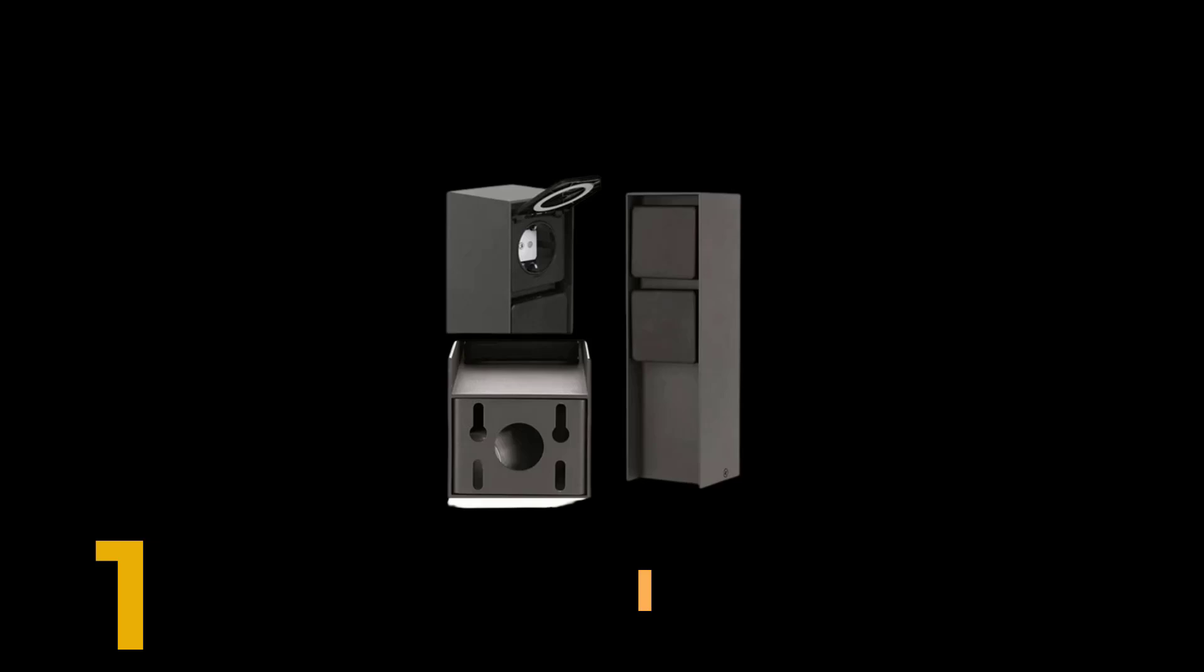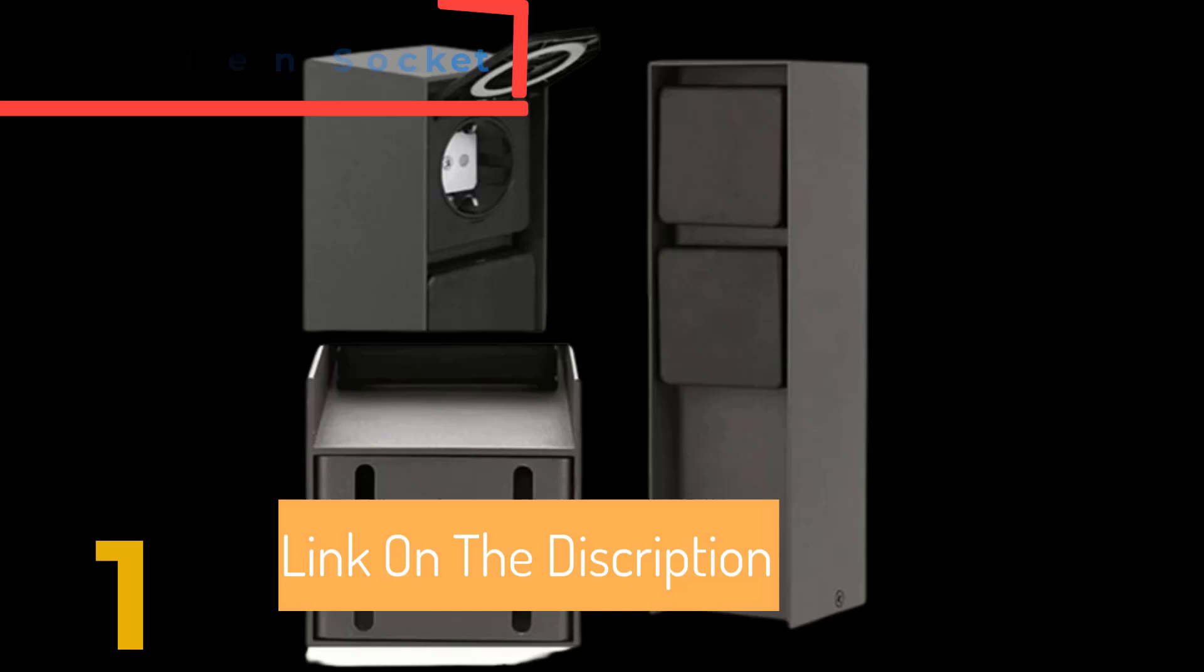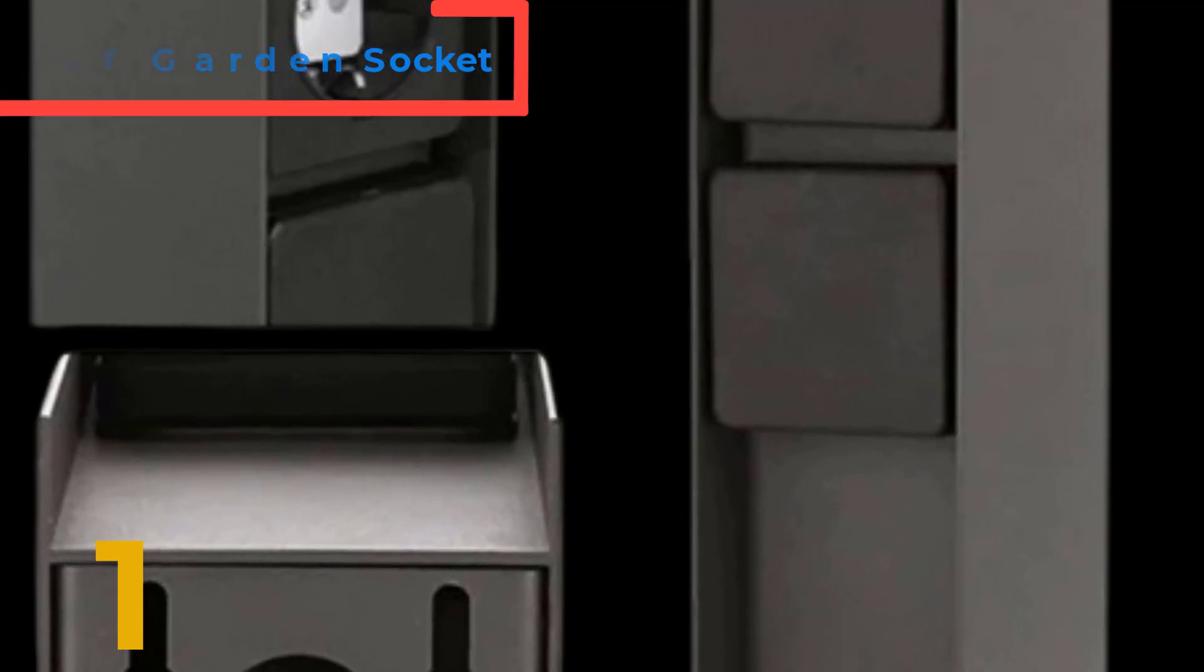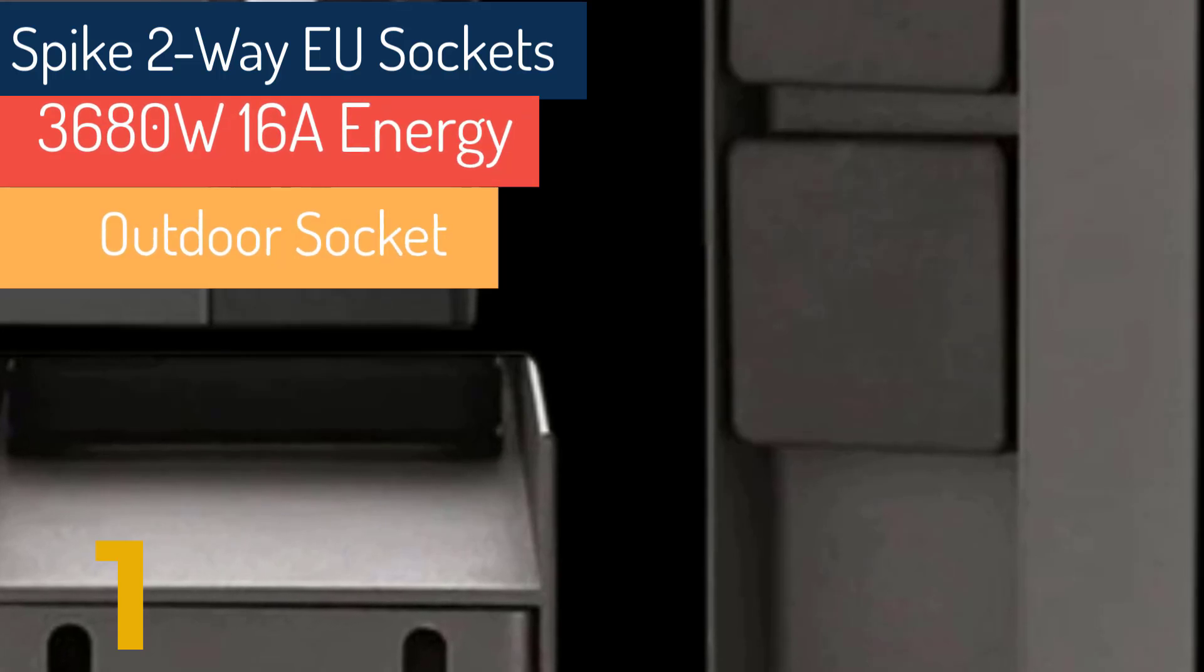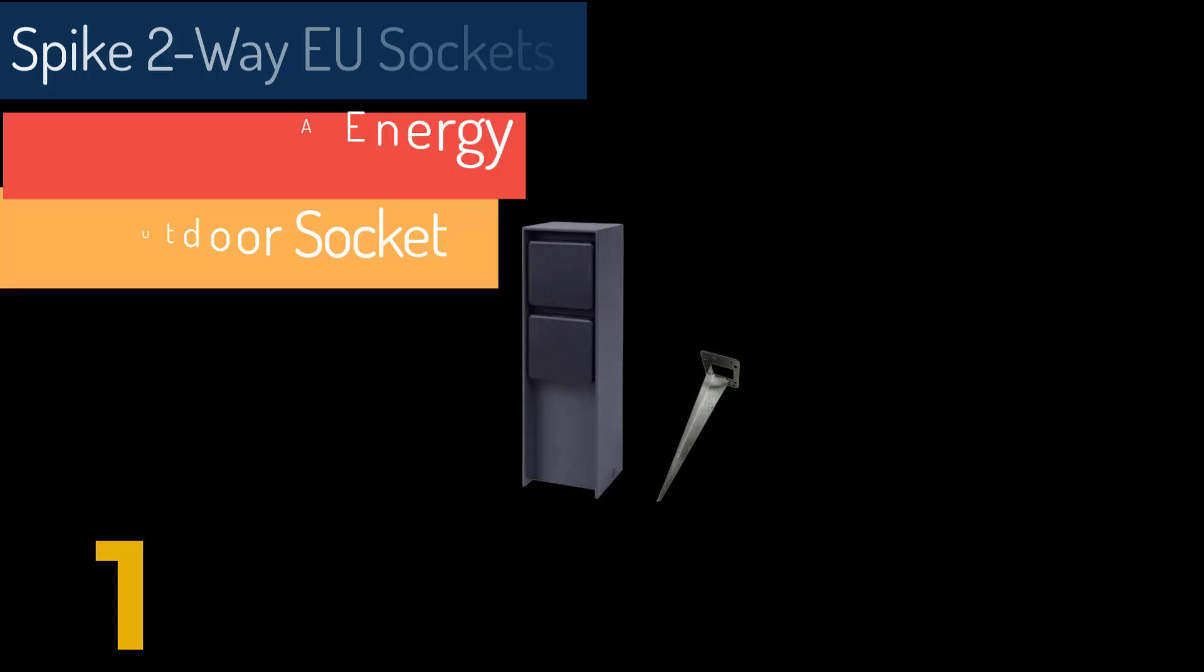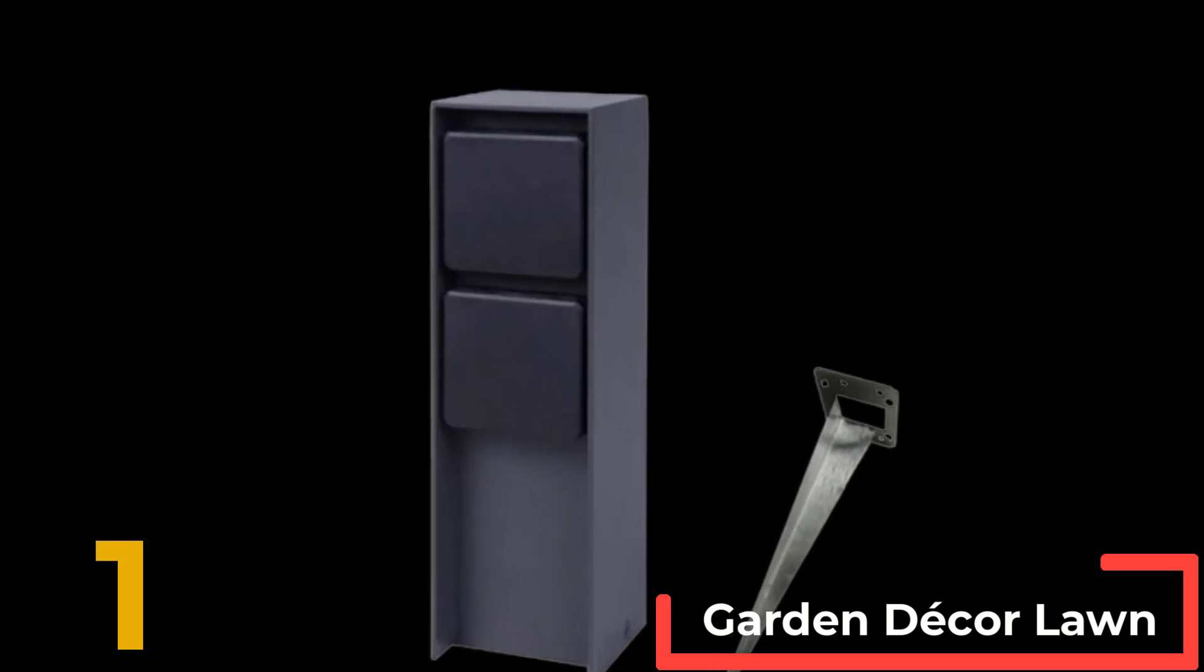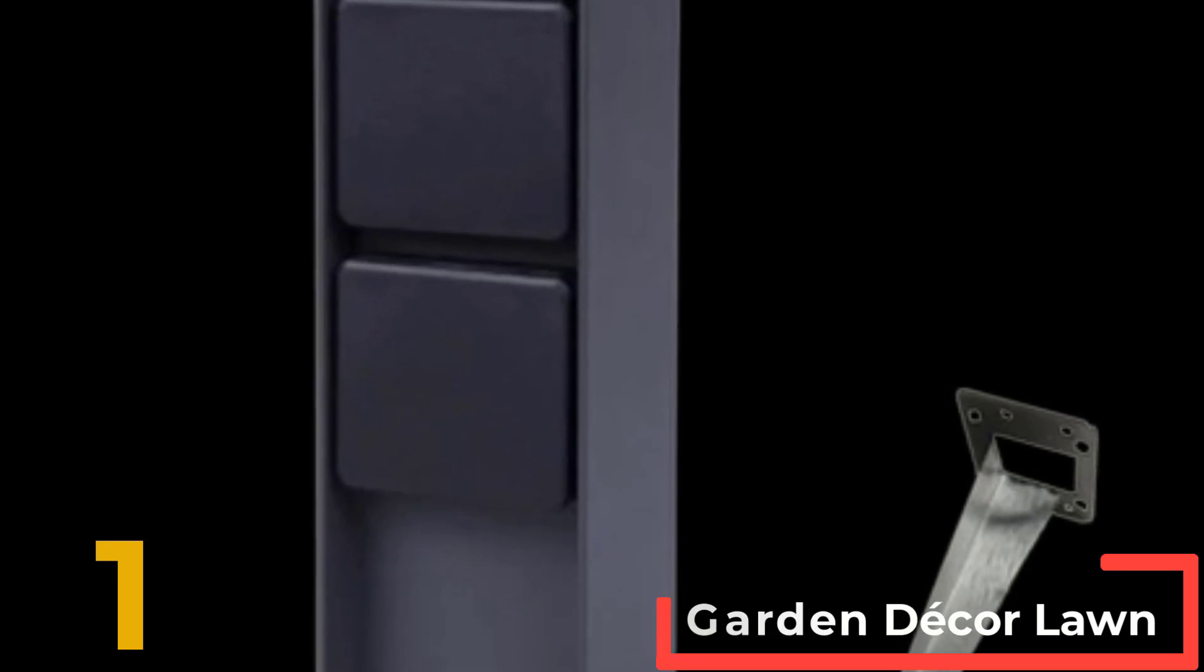Waterproof Garden Socket with Spike, 2-Way EU Sockets, 3680W 16A Energy Column Outdoor Socket for Garden Decor Lawn Mower BBQ. IP44 Outdoor Garden Socket made of stainless steel. Two sockets, weatherproof in rain or snow. The garden plug socket provides the perfect solution to all your garden power needs, great for using on the terrace for electric grill, fountain, or in the garden for lawn mowers and hedge trimmers. The power column has a self-sealing hinged lid which provides optimal protection.